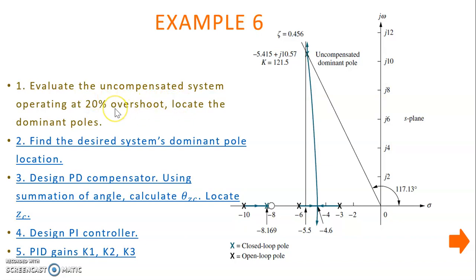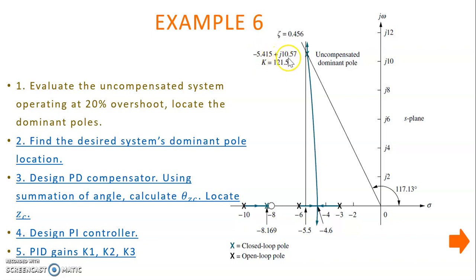From 20% overshoot, we determine the damping ratio as 0.456. Using the gain value K equal to 121.5, we can determine the dominant poles of the uncompensated system, which are equal to minus 5.415 plus or minus j10.57.